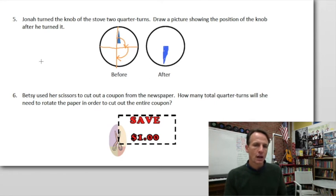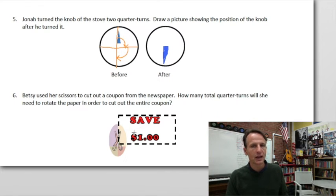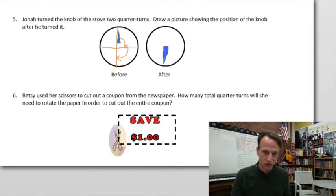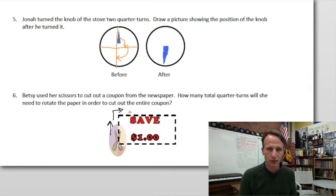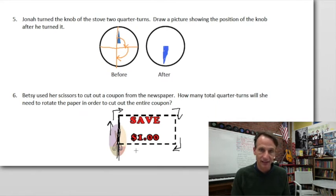Now let's look at Betsy. She used her scissors to cut out the coupon from the newspaper. How many total quarter turns will she need to rotate the paper in order to cut out the entire coupon? Well let's look. She's starting in this direction, there's the scissors. Here's one turn, one quarter turn. There's another, second quarter turn, and a third quarter turn. Now does she need to turn when she gets here? I'd say no because she's already cut this dotted line here.